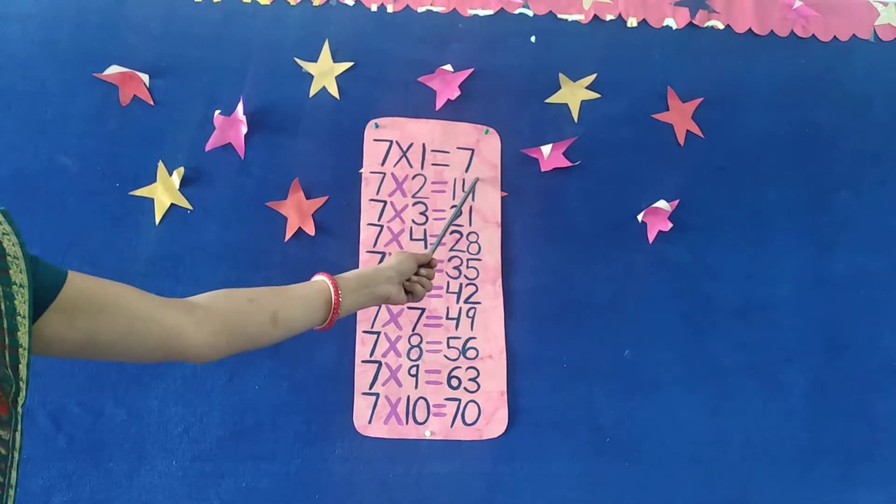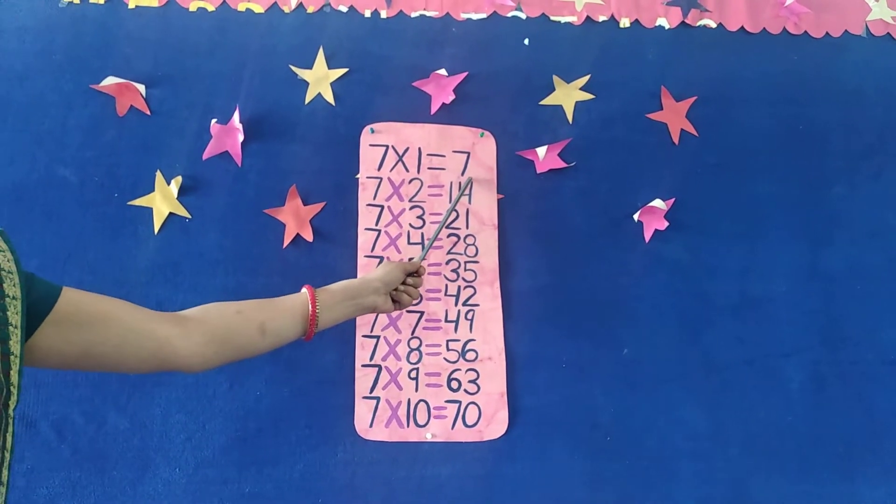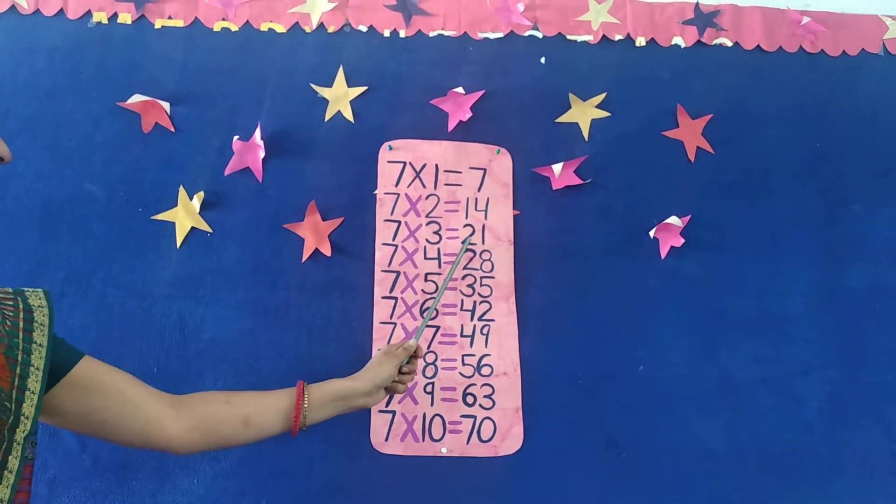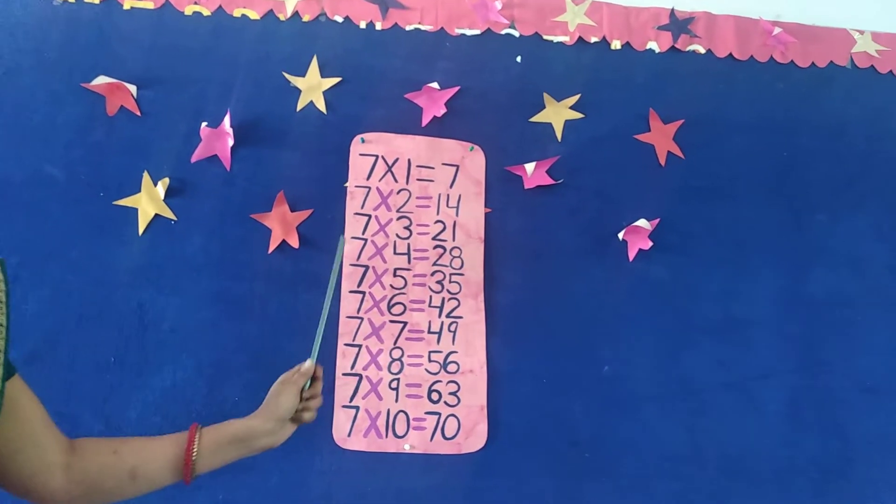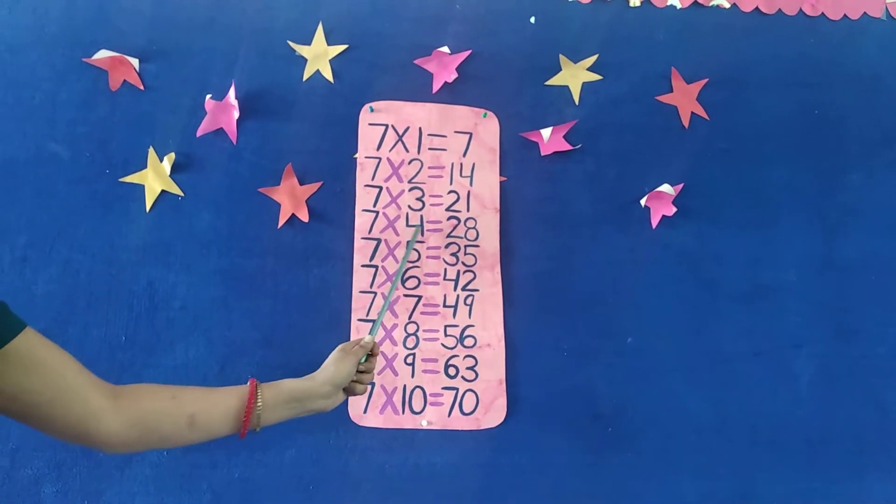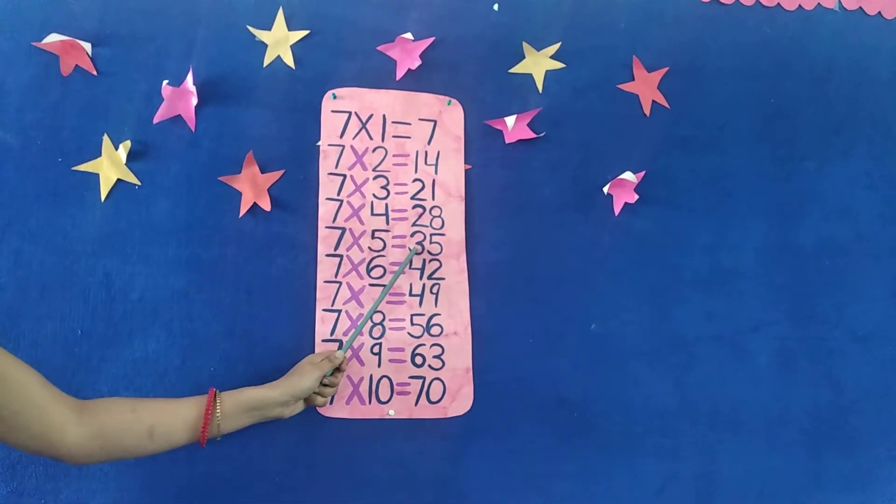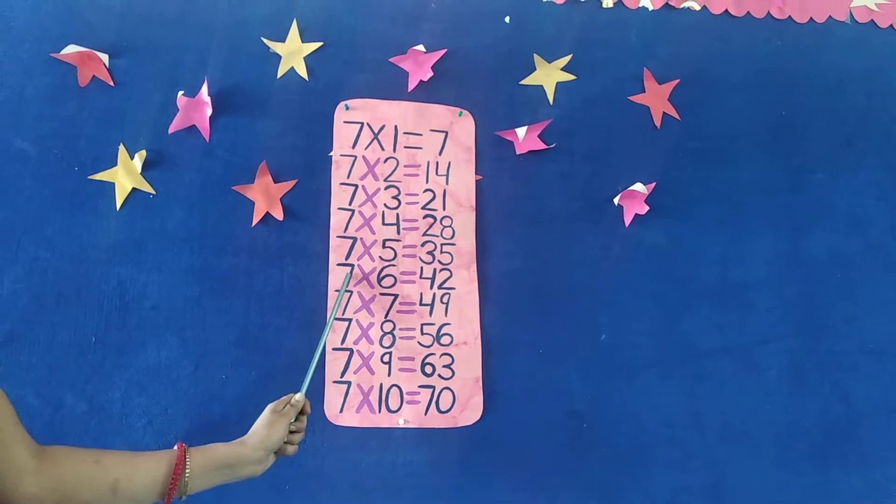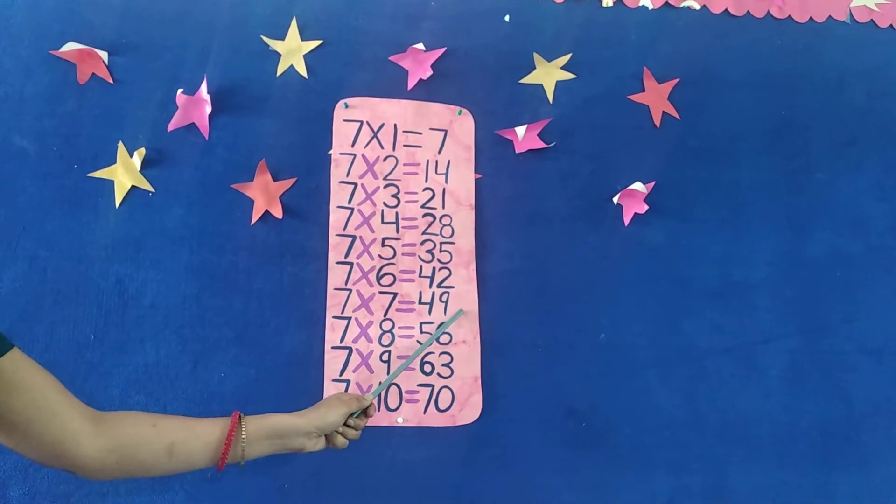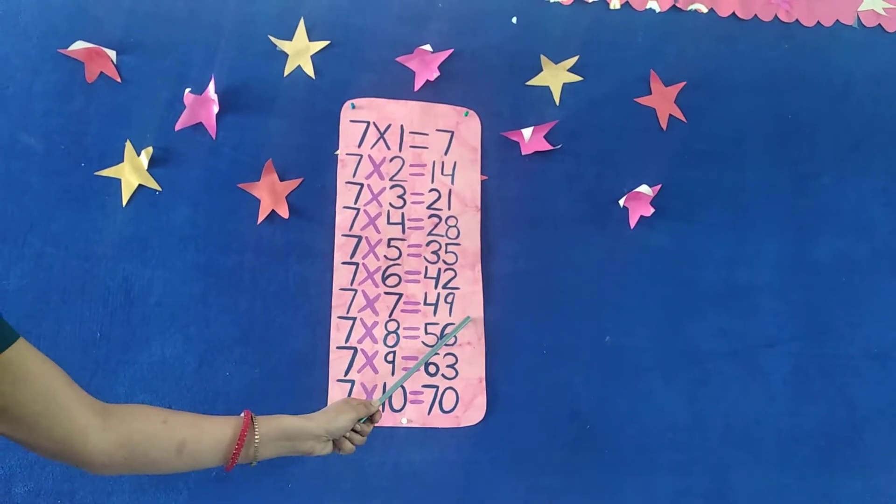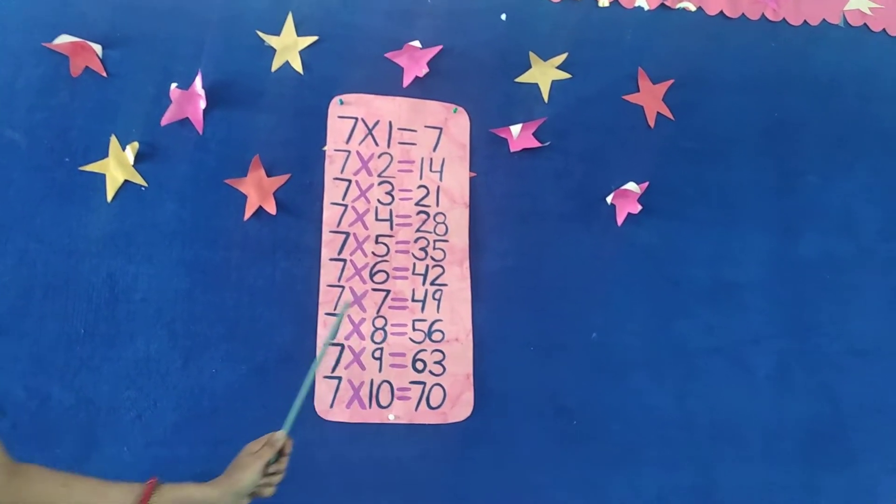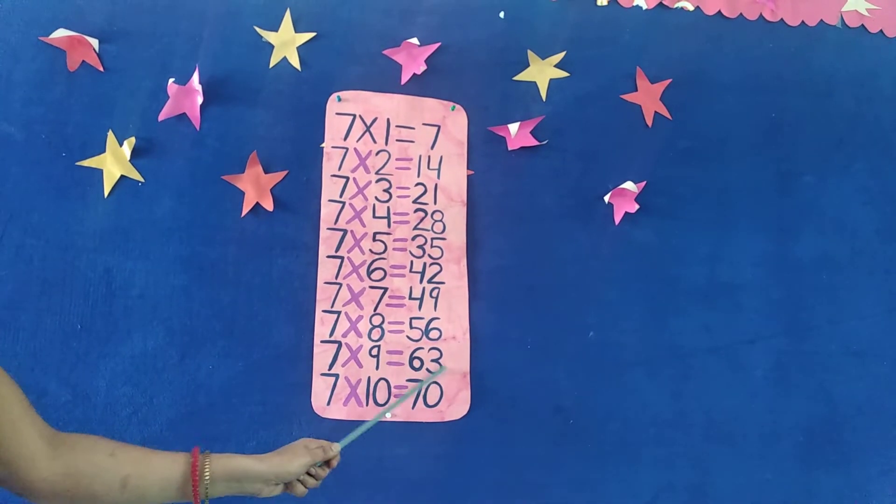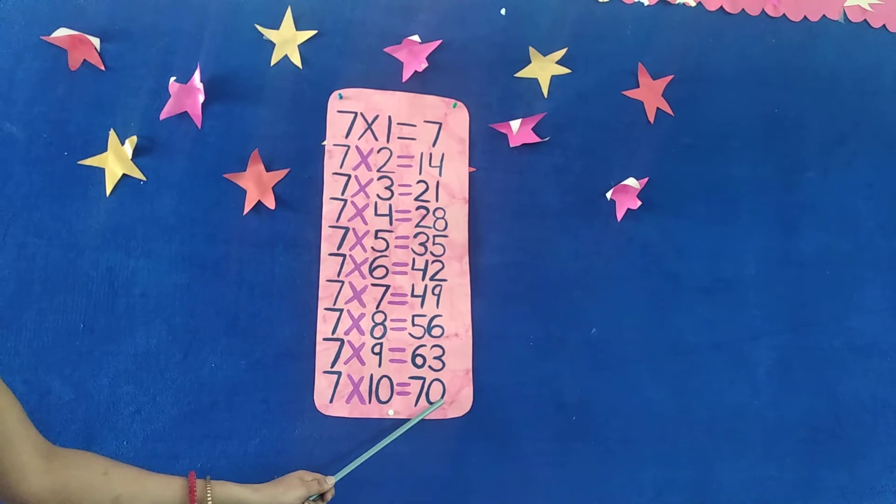7 ones are 7. 7 twos are 14. 7 threes are 21. 7 fours are 28. 7 fives are 35. 7 sixes are 42. 7 sevens are 49. 7 eights are 56. 7 nines are 63. 7 tens are 70. One more time.